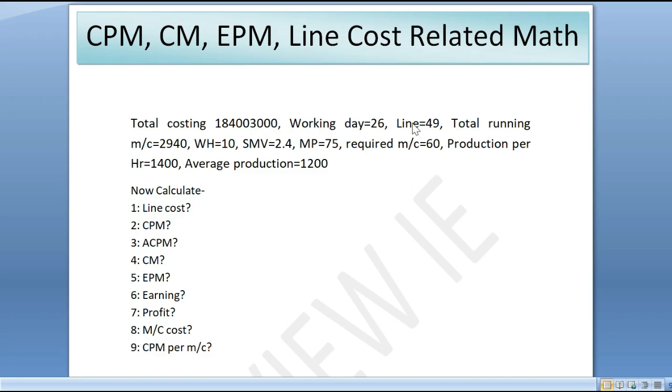Line 49, total running machine 2,940, working day 26, SMV 2.4, manpower 75, required machine 60, production per hour 1400, average production 1200. This is a low SMV basic garment with total cost given.